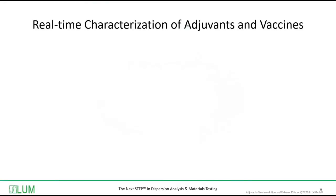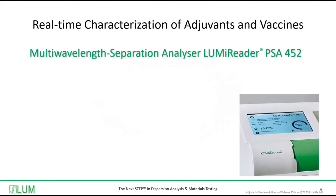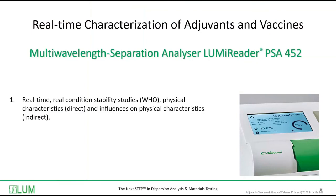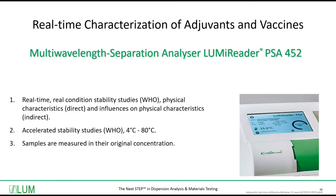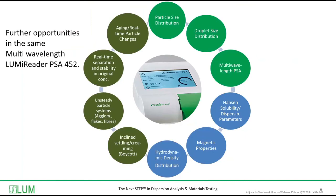Let me now summarize the presentation. When we talk about real-time characterization of adjuvants and vaccines, we refer to the multi-wavelength separation analyzer LumiReader PSA, now in the most modern version 4.5.2. We can perform real-time, real-condition stability studies according to WHO with a focus on physical characteristics directly, and indirectly characterize other characteristics if they influence physical behavior. We can also perform accelerated studies according to WHO because the instrument has a temperature range from +4°C up to +80°C. All samples are measured at their original concentration.